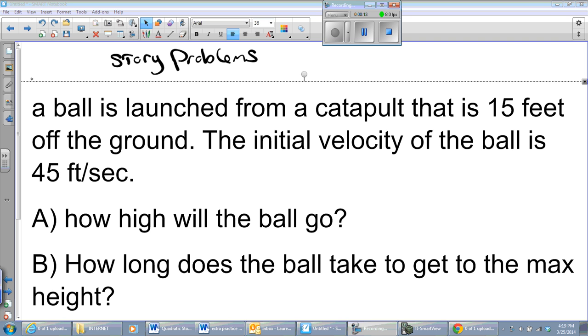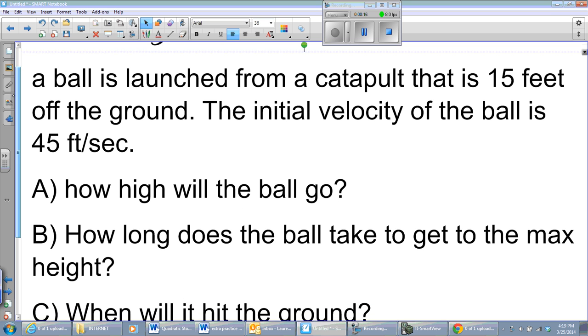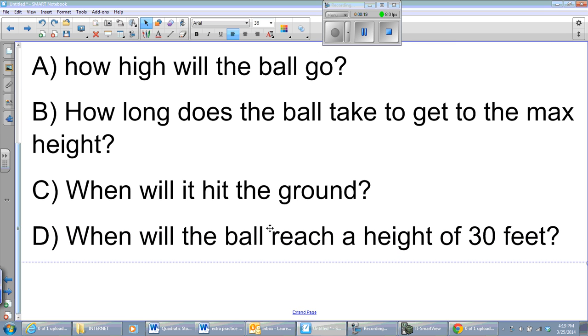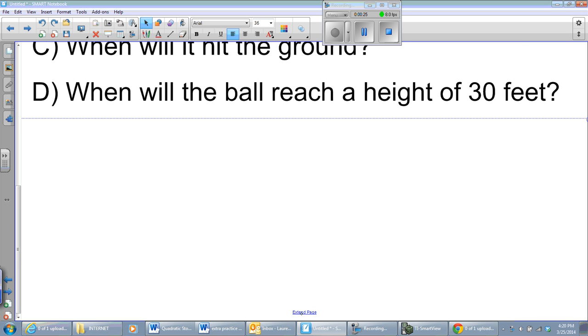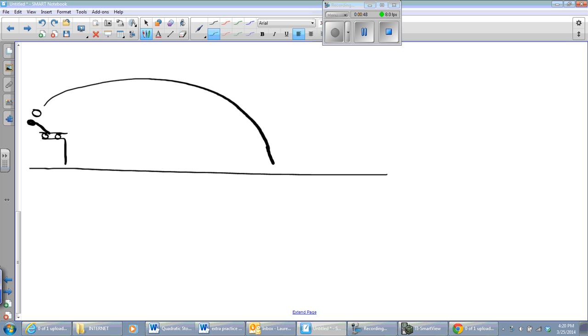Alright, let's see. We've got a ball launched from a catapult that is 15 feet off the ground. Initial velocity of the ball is 45 feet per second. I am going to go ahead and draw a picture. So I've got this little platform going on here.